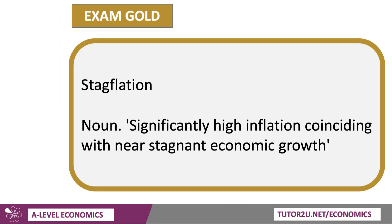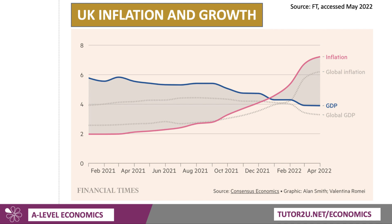So what is stagflation? The noun means significantly higher inflation coinciding with near stagnant growth. So it's an unwelcome combination of high inflation, slowing growth, and perhaps rising unemployment. And this chart taken from the FT is a nice way of showing what's been happening in the UK. You can see that the rate of inflation is now well above four times the official target of inflation. I think the latest inflation rate was 9%. This chart shows inflation at 7%. So inflation rising, but growth slowing. And of course, this is the threat of stagflation.